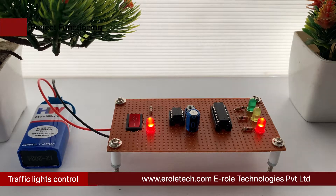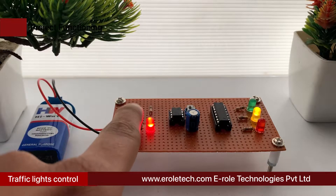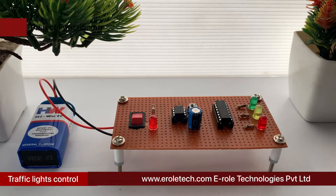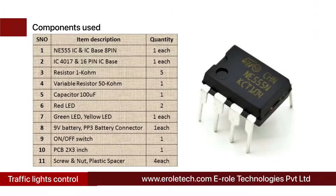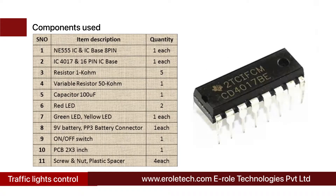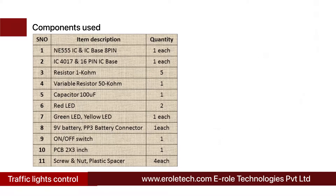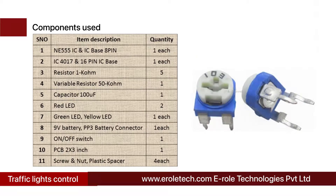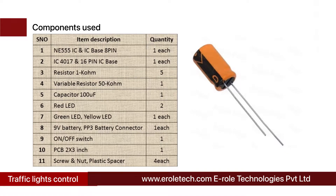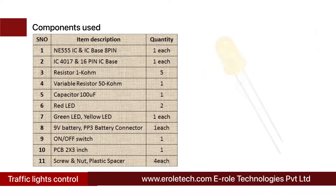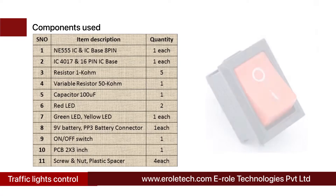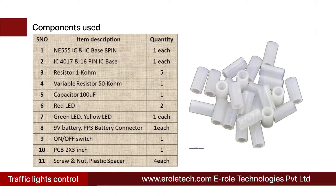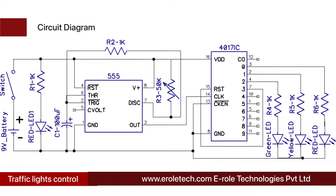These are the components needed for this project: 555 timer IC with 8-pin IC base, CD4017 decade counter IC with 16-pin IC base, five 1 kilo ohm resistors, one 50 kilo ohm variable resistor, one 100 microfarad electrolytic capacitor, two red LEDs, one green LED, one yellow LED, a 9-volt PP3 battery with connector, an on/off rocker switch, a zero PCB, four screws with nuts, and four plastic spacers.